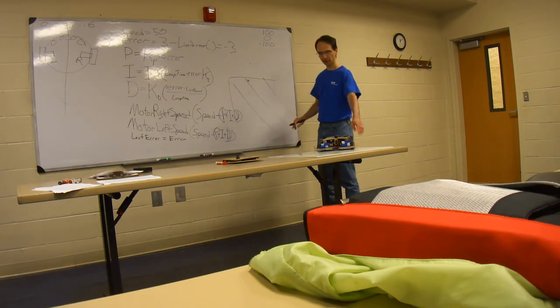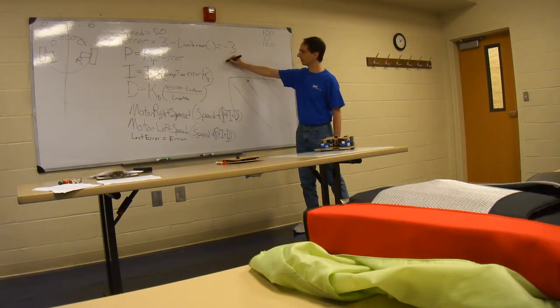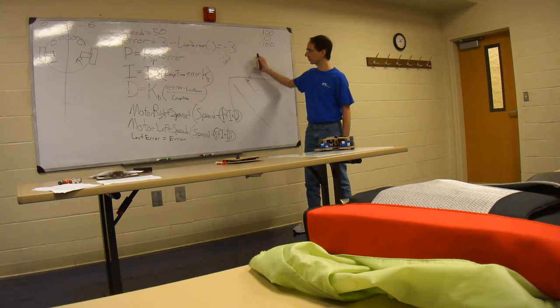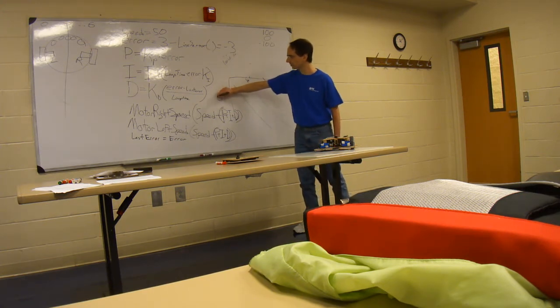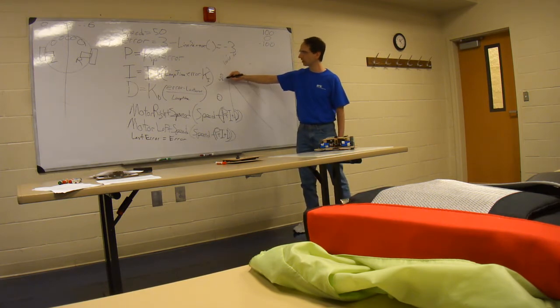So if my sensor is analog, I can actually get a nice reading. Let's say when I'm on the table, I'm getting like a thousand for reflection. And then when I'm off, I'm getting zero. So when I'm on the line, I should be getting a value somewhere around 500.